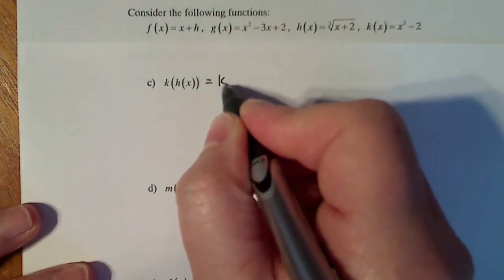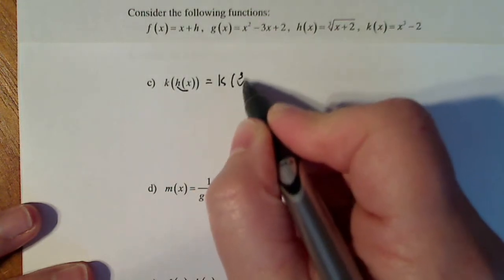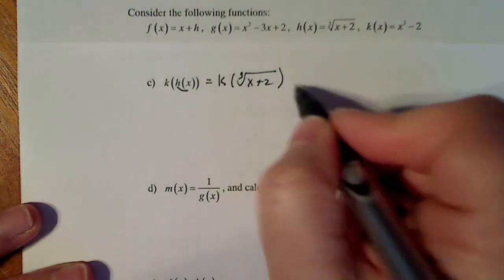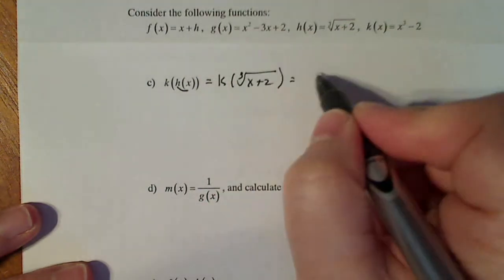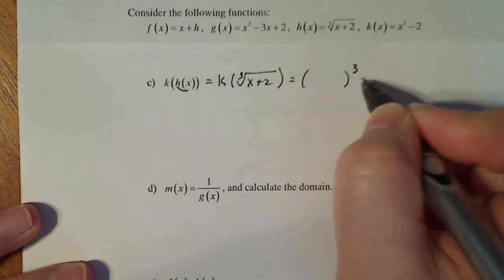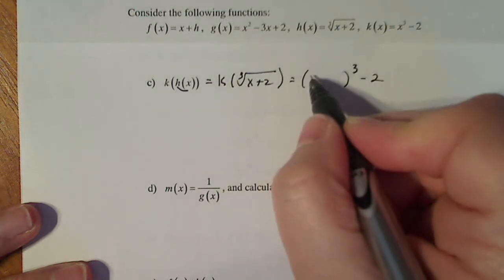I'm going to replace H with what it's defined as, the cube root of X plus 2. Then I'll write K down with big parentheses where X is supposed to be, but I'll replace that X with the cube root of X plus 2.